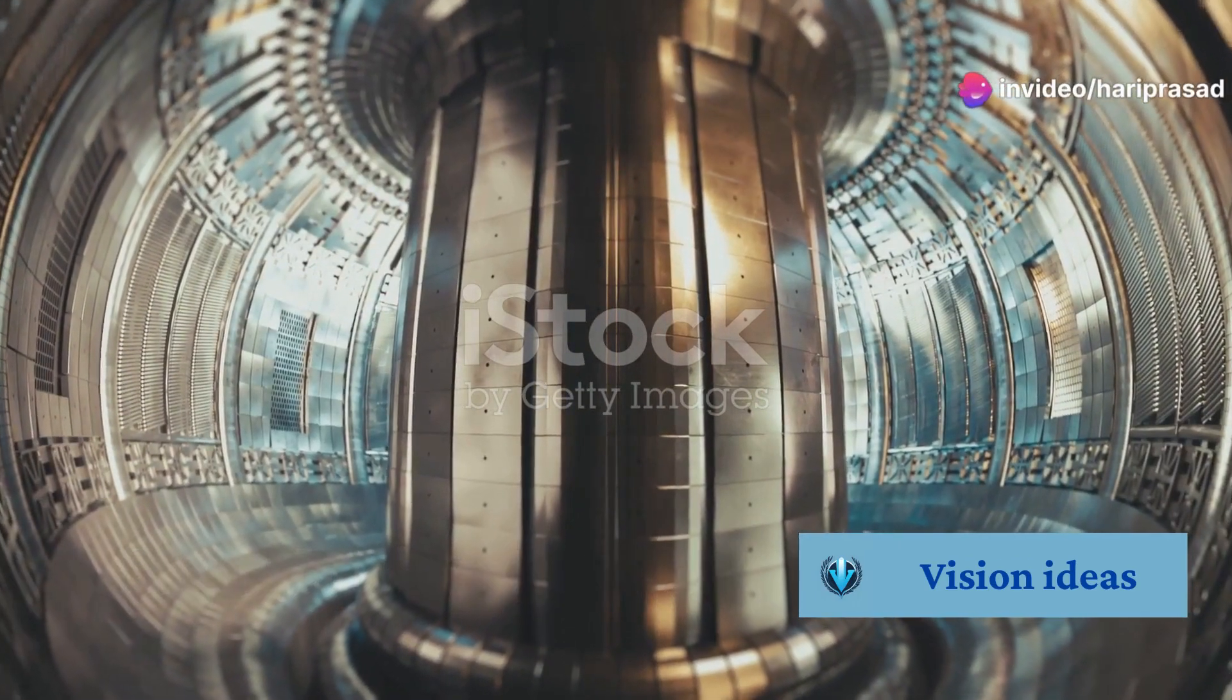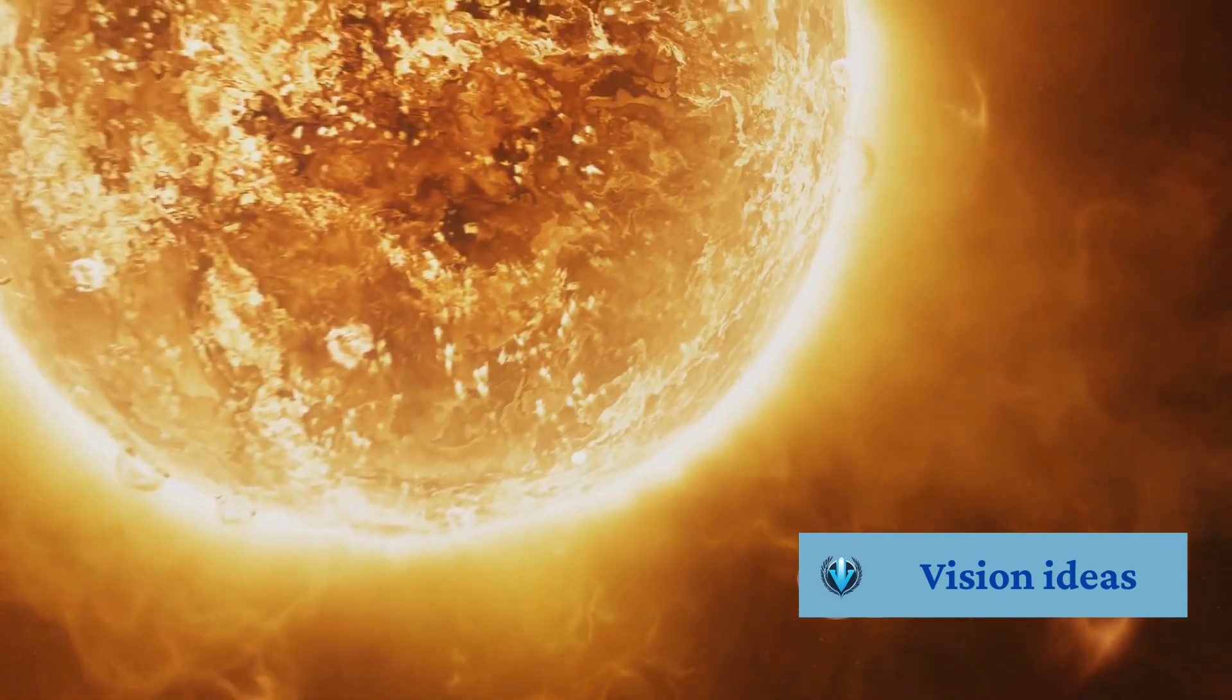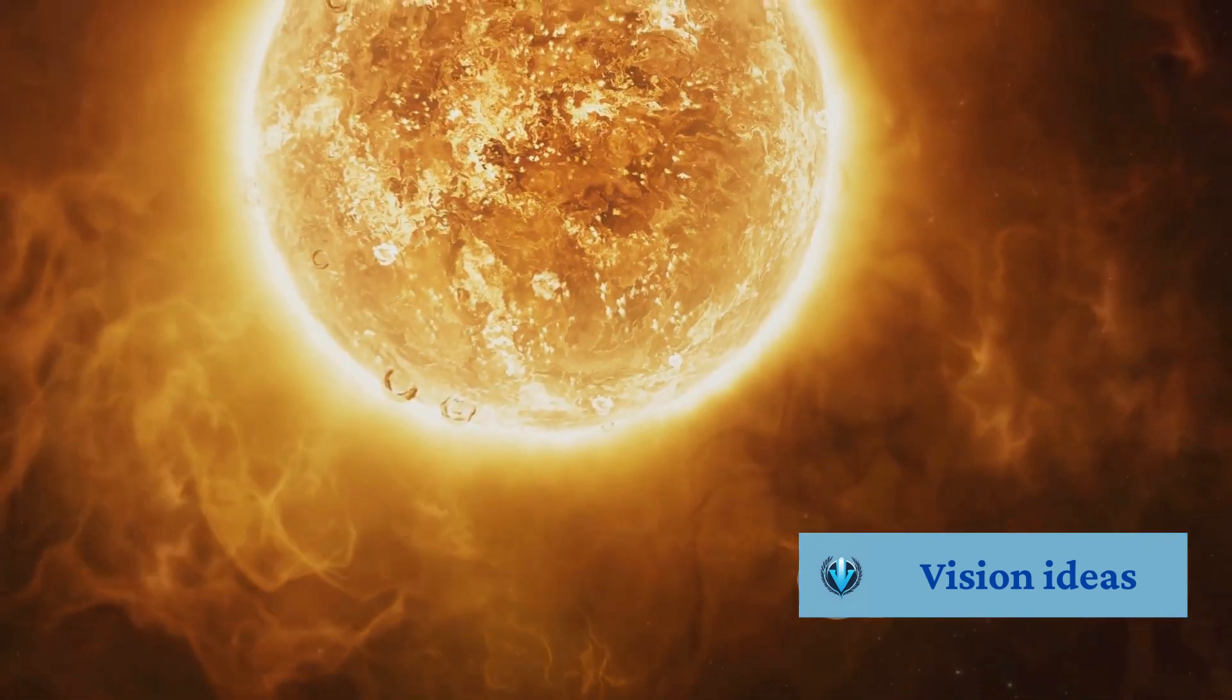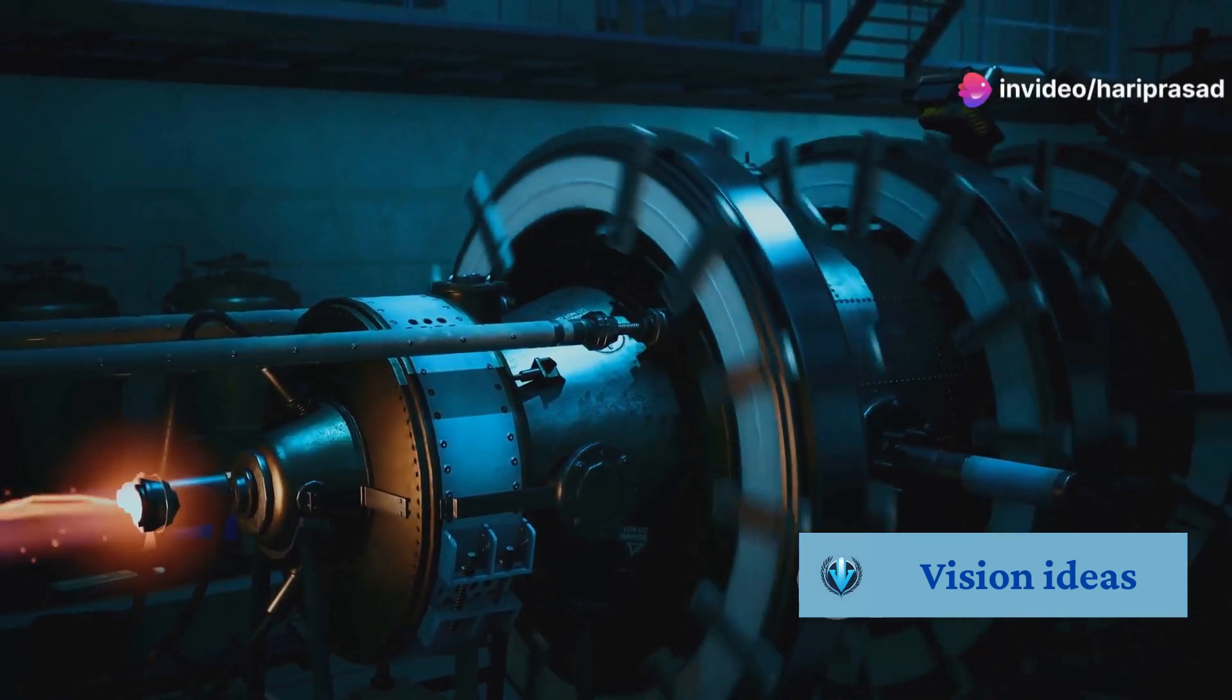Our sun is a giant furnace, powered by the fusion of hydrogen atoms. Deep inside the sun's core, immense pressure and temperatures create the perfect conditions for fusion to occur. Here's how it works. Under extreme pressure, hydrogen atoms collide at incredible speeds.